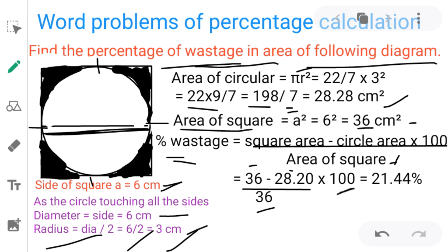We have to multiply with 100 to get the percentage symbol. 36 minus 28.28 divided by 36 and 100, we get 21 percent, 21.44 percent, that is out of total material, 21.44 percentage of the square material is wasted.